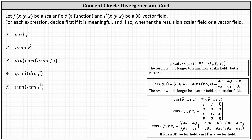Let f be a scalar field or function and F be a 3D vector field. For each expression, decide first if it is meaningful, and if so, whether the result is a scalar field or vector field. Let's begin by reviewing gradient, divergence, and curl.